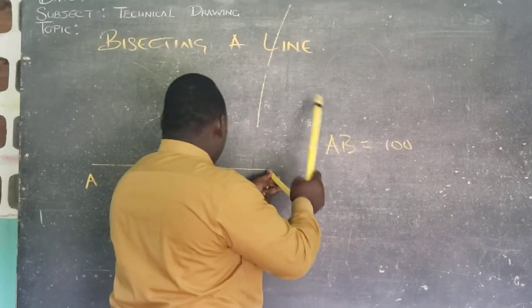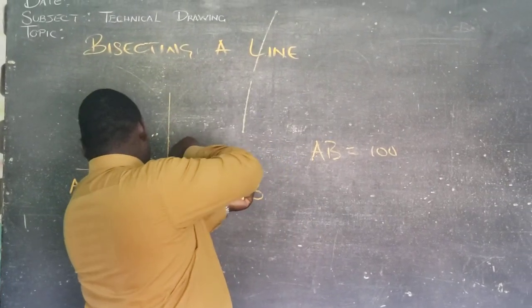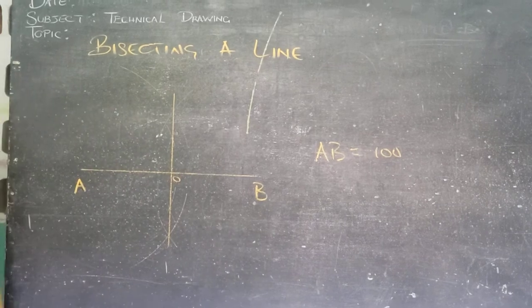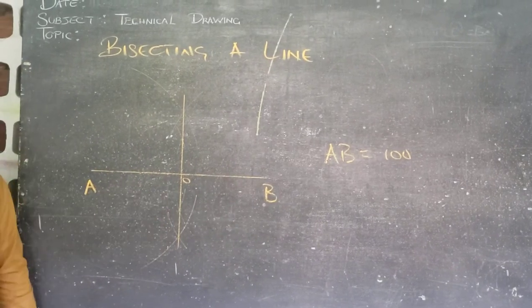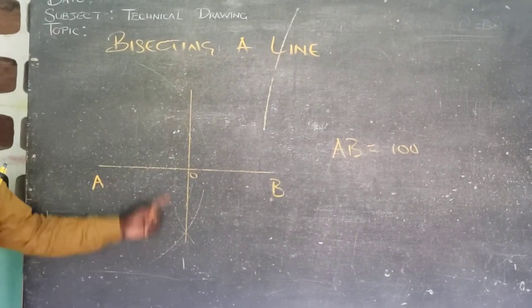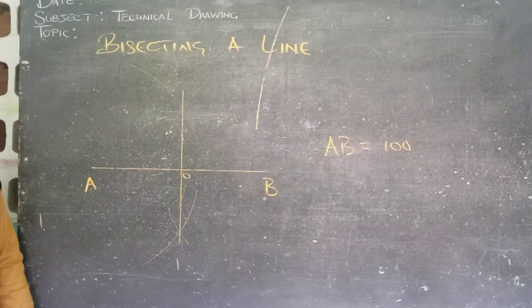And then without adjusting the radius, we go to B and we repeat the process. And we realize that we have now bisected our given line.